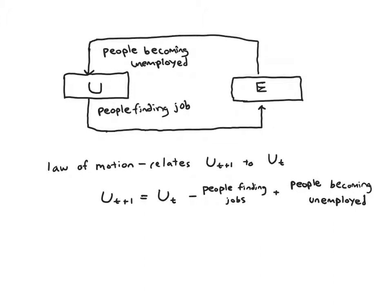Minus the number of people who found jobs, because they're no longer unemployed - that's like the flow out of the tub. Plus we're going to have to add in the number of people who became unemployed - that's like the flow into the tub. And that'll tell us the total number of people who are unemployed next period. It'll be whoever we started with, minus who we lost, plus who we gained.